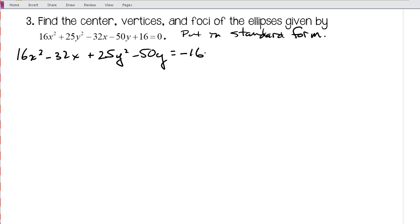Now I'm going to complete the square for the x's and for the y's, and in order to complete the square remember that the leading coefficient has to be 1. So I'm going to factor a 16 out of my x's, so that's going to be x² - 2x and then I'm going to add something in there. And I'm also going to factor for my y's, I'm going to factor a 25, so that's 25 times y² - 2y and then plus something over there, is equal to -16.